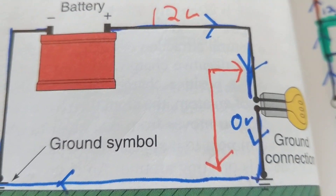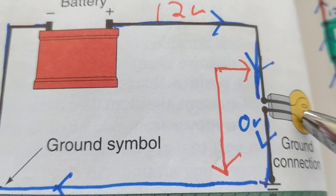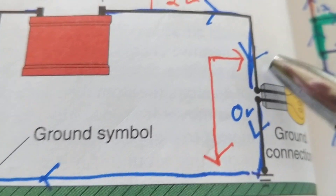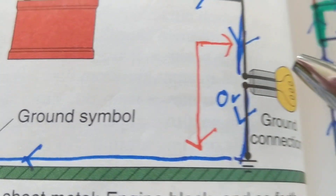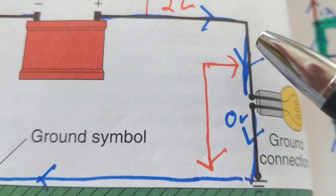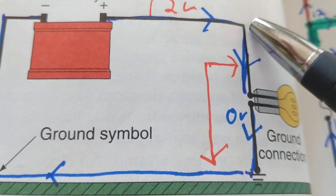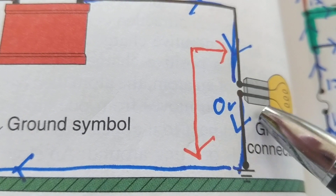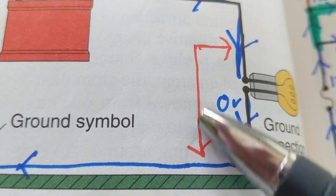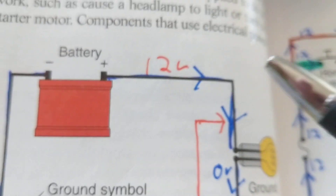If there's a short over here, it bypasses the load — the bulb. Current takes the path of least resistance. So even if there are 10 ohms here, and the jumper wire has maybe 3 ohms, that is still much less. Current will come to the junction and choose the jumper wire — the path of least resistance — and go right to ground, bypassing the bulb.